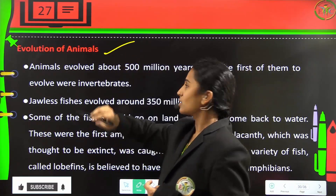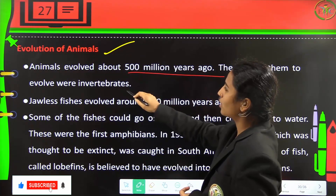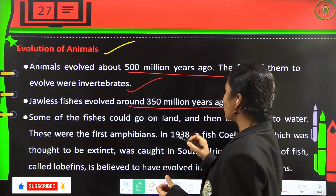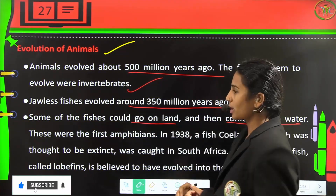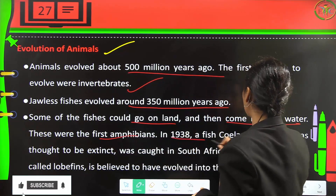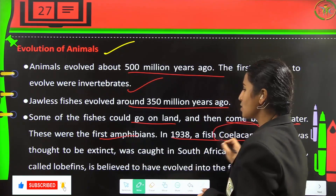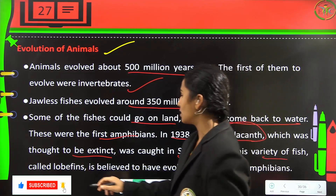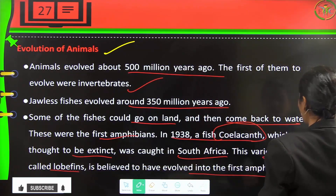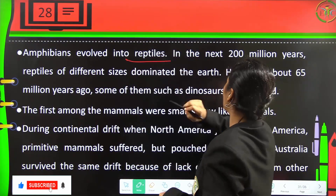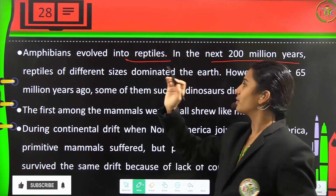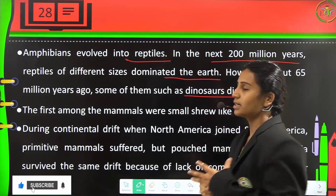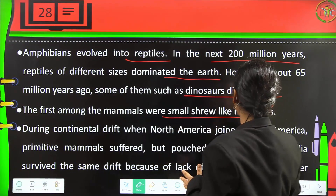Animals evolved around 500 million years ago, with the first being invertebrates. Jawless fishes evolved 350 million years ago; some fishes could go on land and then returned to water, becoming the first amphibians. In 1938, a fish called coelacanth, thought to be extinct, was caught in South Africa — this lobe-finned fish is believed to have evolved into the first amphibians. Amphibians evolved into reptiles, which dominated Earth for about 200 million years. About 65 million years ago, dinosaurs disappeared, and the first mammals were small shrew-like creatures.